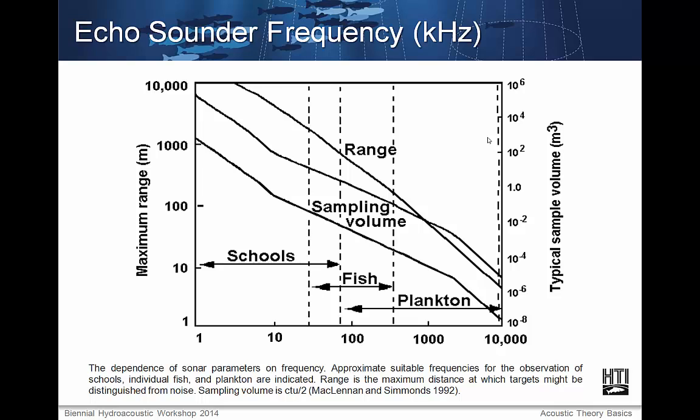Here is a summary of acoustic properties affected by frequency. The plot's horizontal axis is kilohertz, with frequency ranges suited to detecting schools, individual fish, and plankton indicated. Note that higher frequency acoustics are better suited to smaller objects, and vice versa. The plot's left vertical axis indicates range — note that the higher the frequency, the shorter the maximum range for detection. Depending on the type of target, different frequencies should be used accordingly.